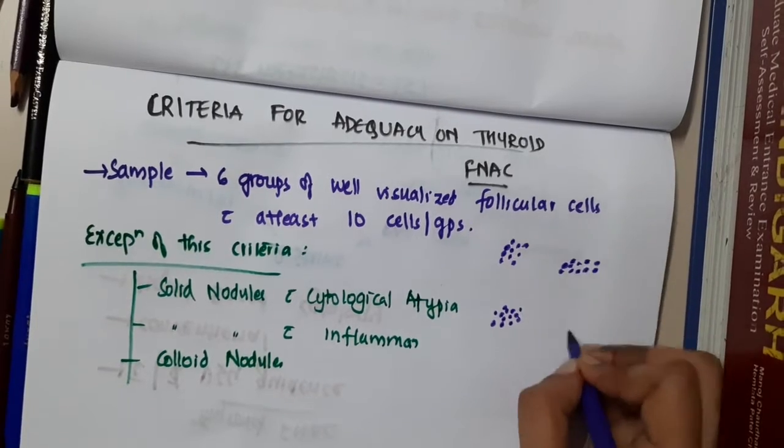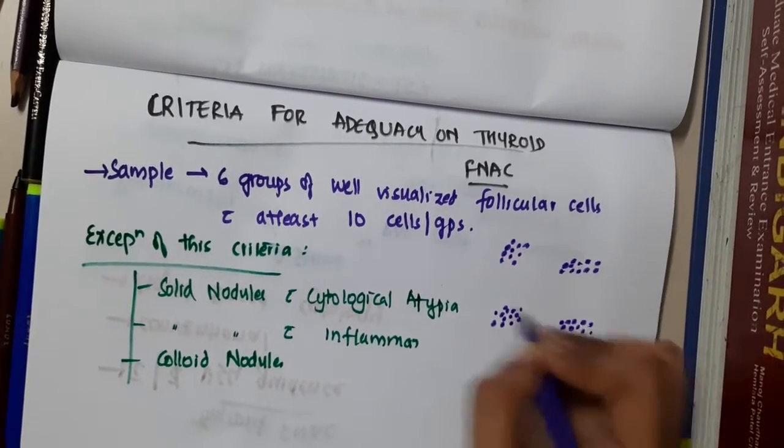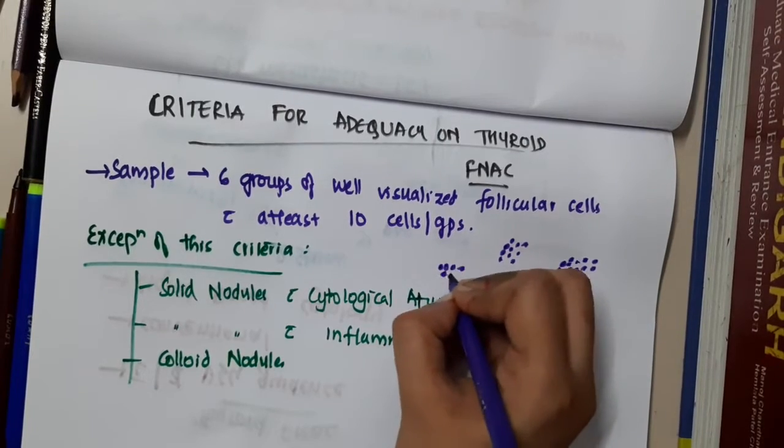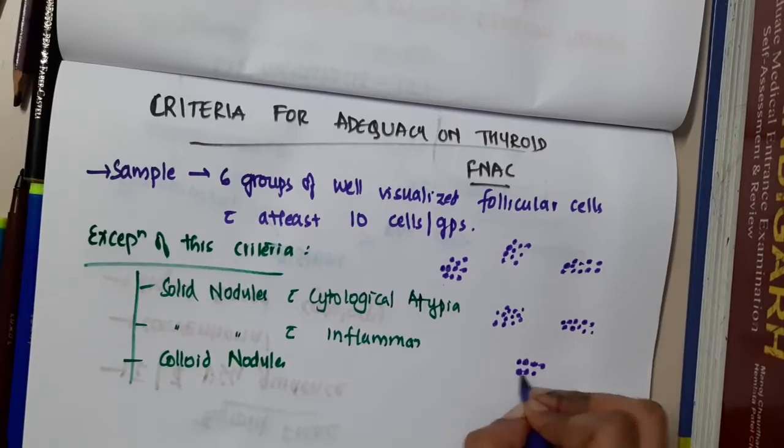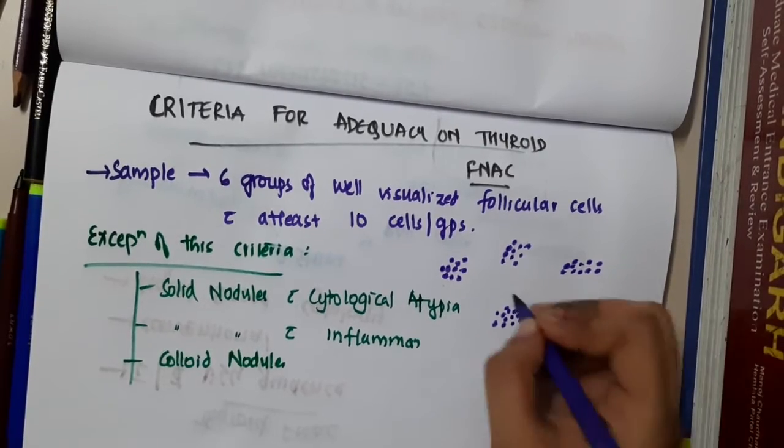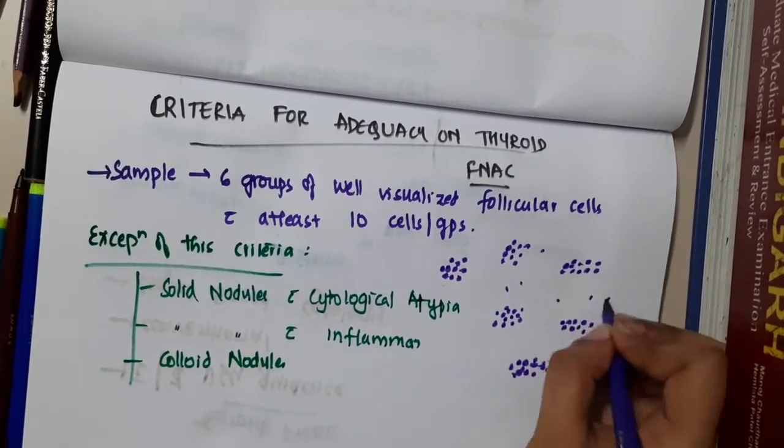This is more than 10 cells and this is one more group with more than 10 cells. This is one more group with more than 10 cells. So total we have 6 groups here with more than 10 cells.